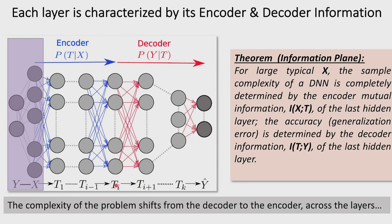I(Y;T) is the mutual information between T and Y — the best prediction of the label I could achieve from this particular partition of the input. In some asymptotic sense, I(X;T) dominates the sample complexity of the decoder, and I(Y;T) dominates the generalization error: the higher I(Y;T), the better the generalization; the lower I(X;T), the fewer samples I need to calculate the decoder. The encoder starts very simple and the decoder very complex, and as we move from layer to layer the encoder becomes more complex and the decoder simpler until the last decoder is just a linear separator.